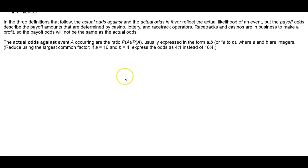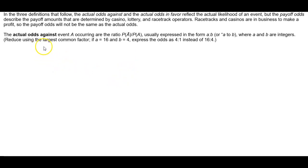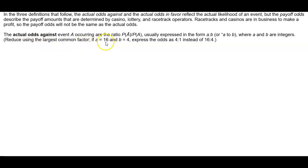The actual odds against event A occurring are the ratio of the probability of the complement of A divided by the probability of event A occurring. This is usually expressed in the form A to B, where A and B are integers. Reduce using the largest common factor — so if A is 16 and B is 4, we would express the odds as 4 to 1 instead of 16 to 4.